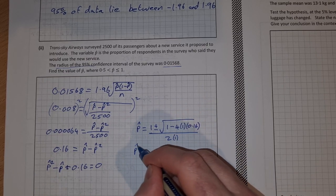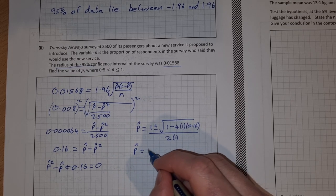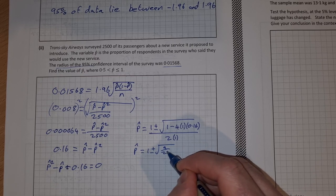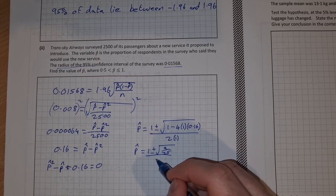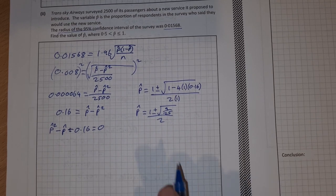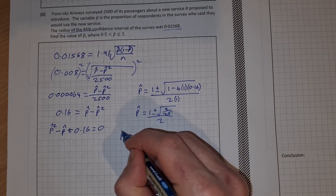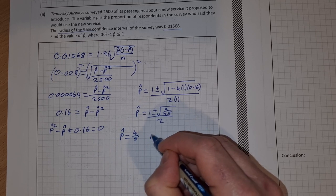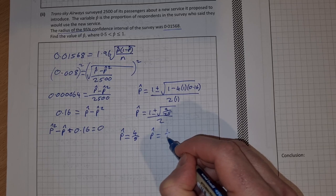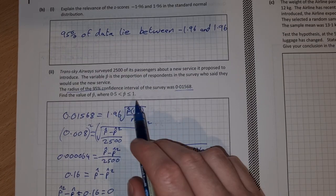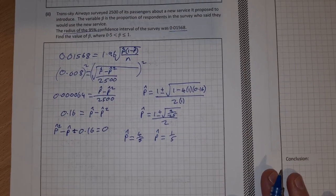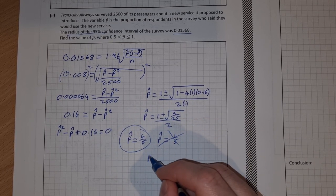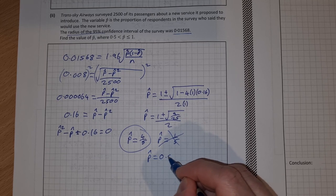So p-hat, simplifying this down, it's going to be 1 plus and minus the square root of 9 over 25, all over 2. You can type that into the calculator. You get two solutions: p-hat equals 4 over 5, and p-hat equals 1 over 5. Just checking the question, it says that it has to be between 0.5 and 1, so it's this one. We don't accept that one. So p-hat equals 0.8.